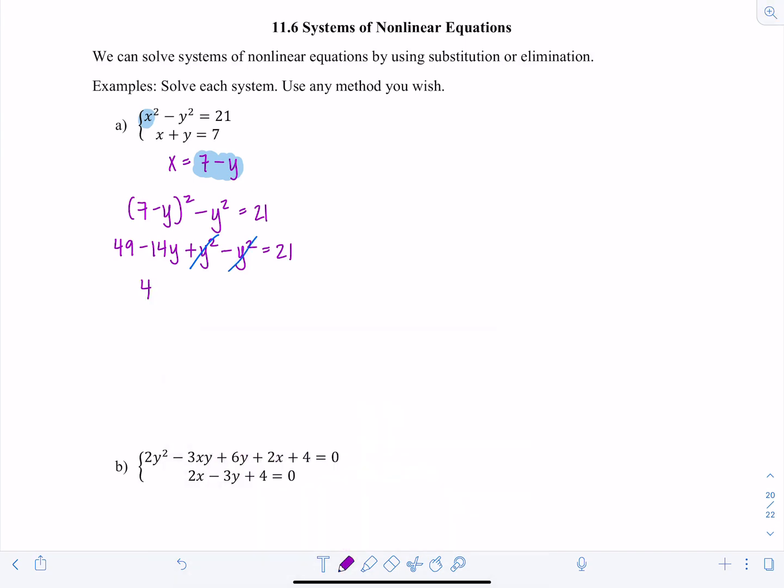So I just have 49 minus 14y equals 21. So negative 14y is negative 28, which means y equals 2.